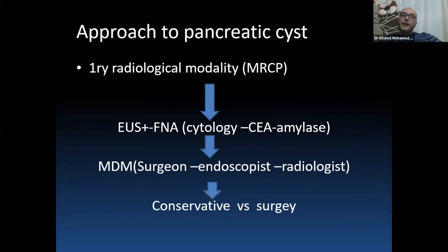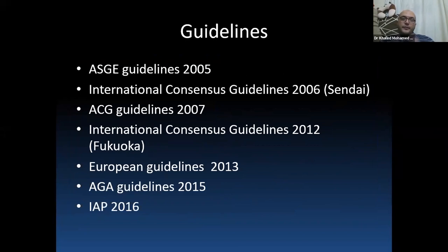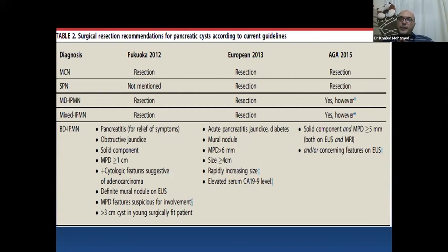The approach to a pancreatic cystic lesion includes radiological modalities like MRCP and CT, followed by EOS FNA targeting cytology, CEA, and amylase. A multidisciplinary approach and meeting between surgeon, endoscopist, and radiologist is essential to decide on observation versus surgery. After reviewing many guidelines, there is discrepancy between them. The most applicable guidelines are Fukuoka 2012, European guidelines 2013, and EGA 2015.